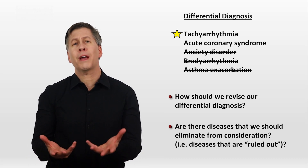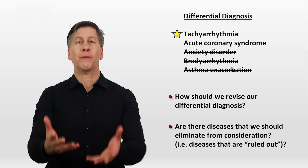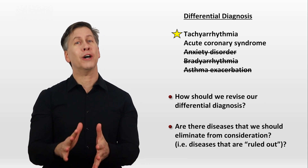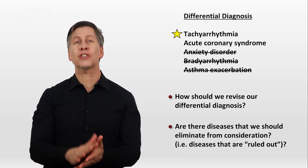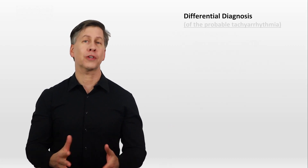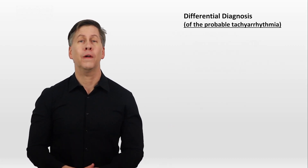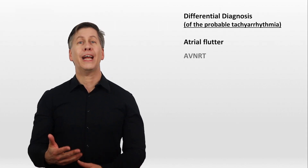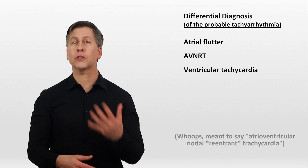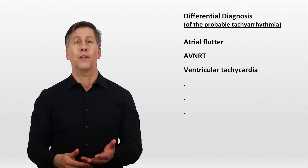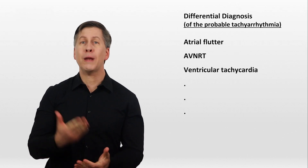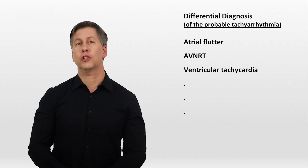At this point you might think we're done — we have a probable diagnosis of tachyarrhythmia. But that's not the end of the story, because tachyarrhythmias is just a category itself; it has its own framework and its own differential diagnosis. For example, is this patient experiencing atrial flutter, atrioventricular nodal tachycardia, ventricular tachycardia, or something else totally different? This is just another way in which the differential is iterative — sometimes the framework from which the differential is drawn is changed too.